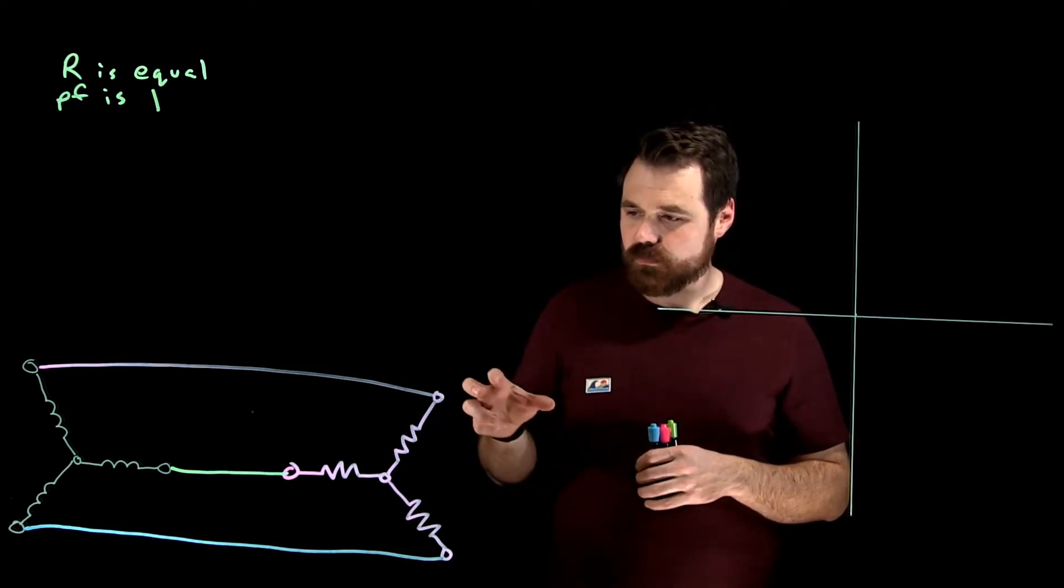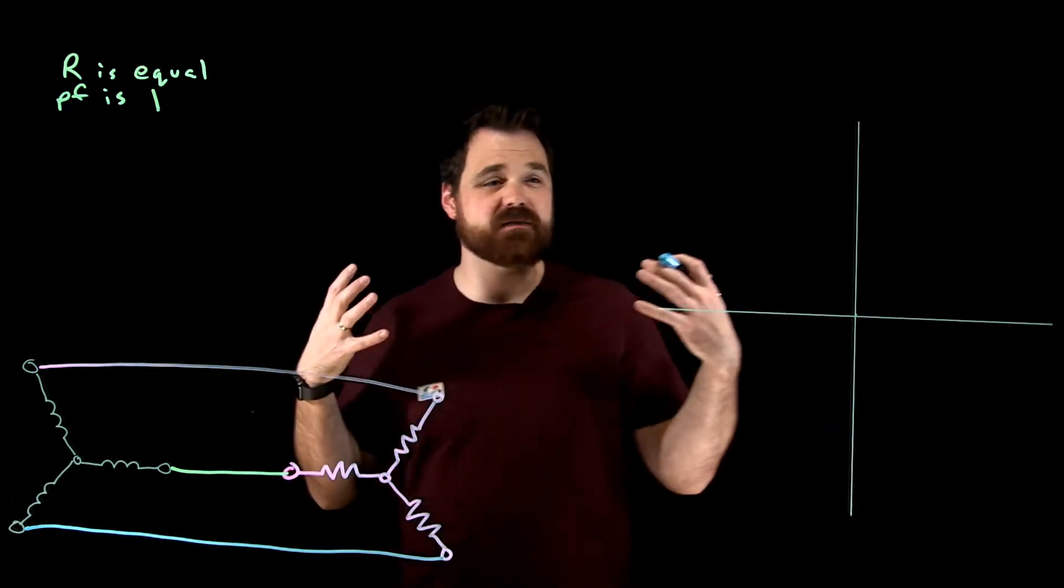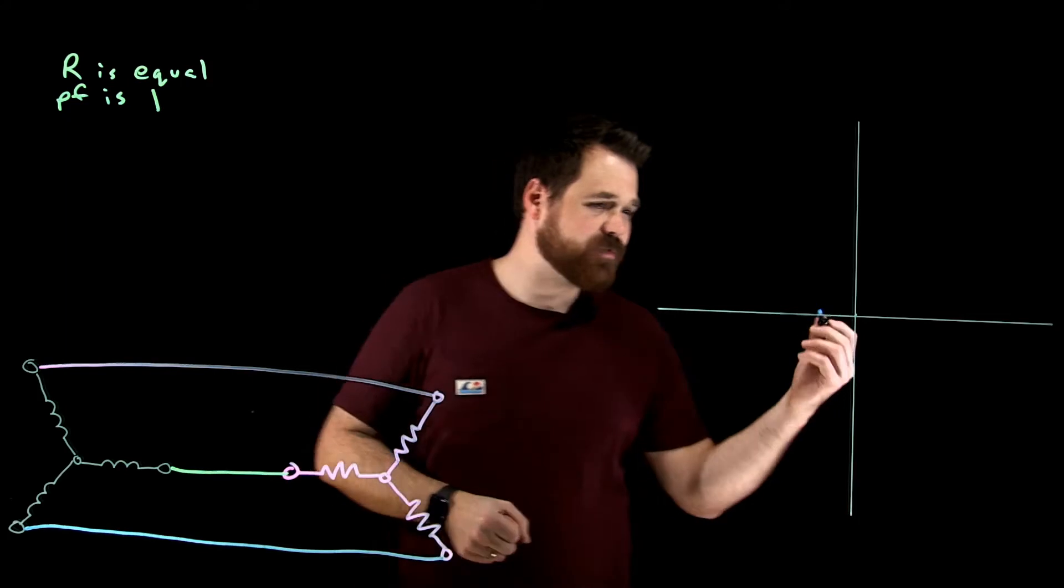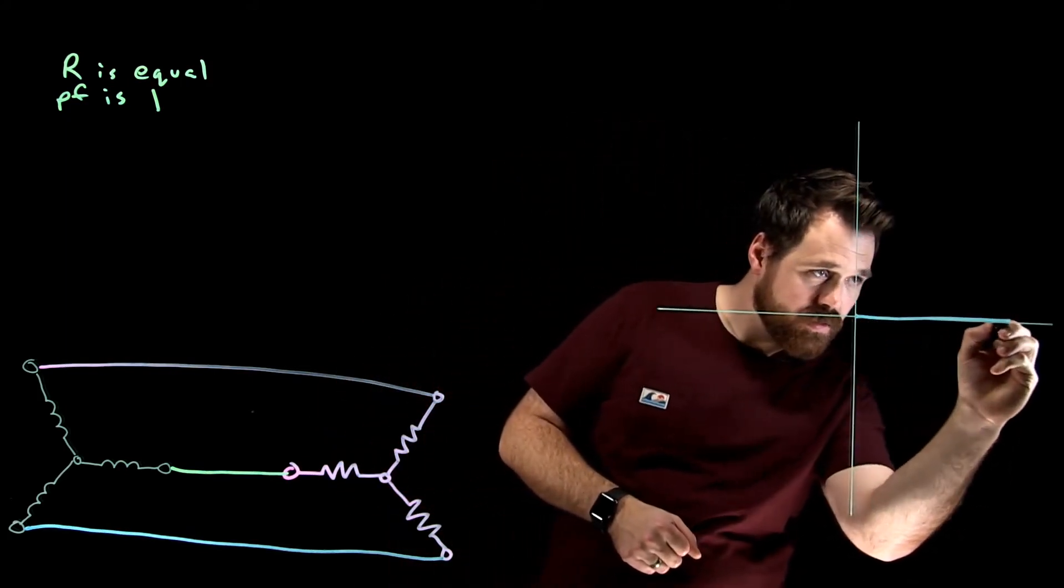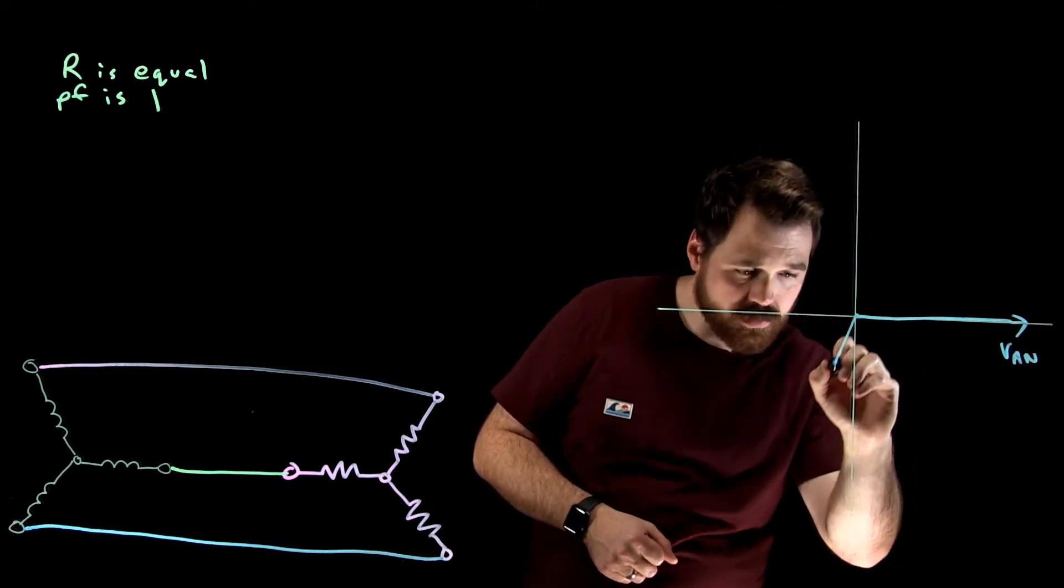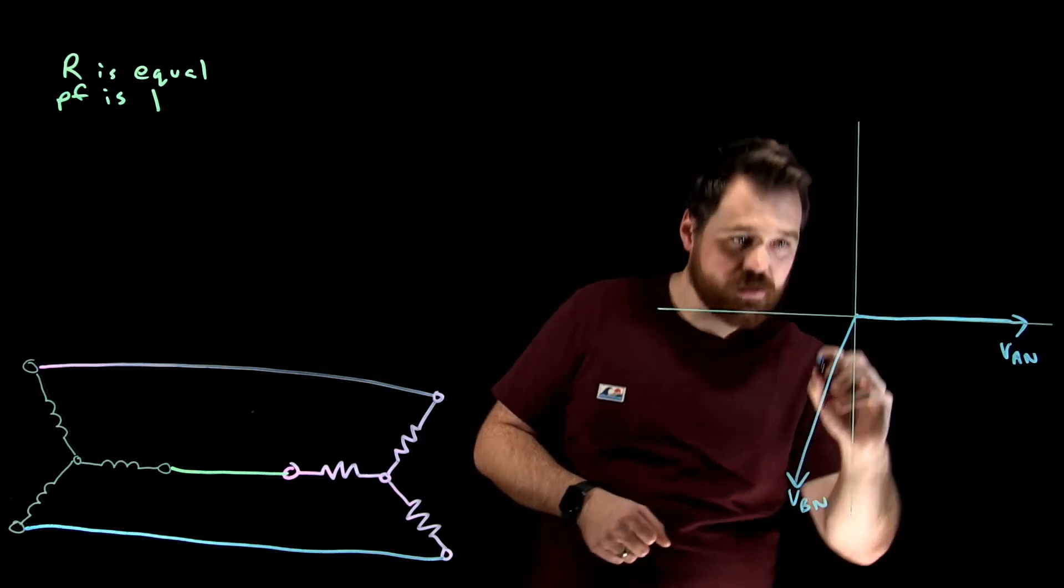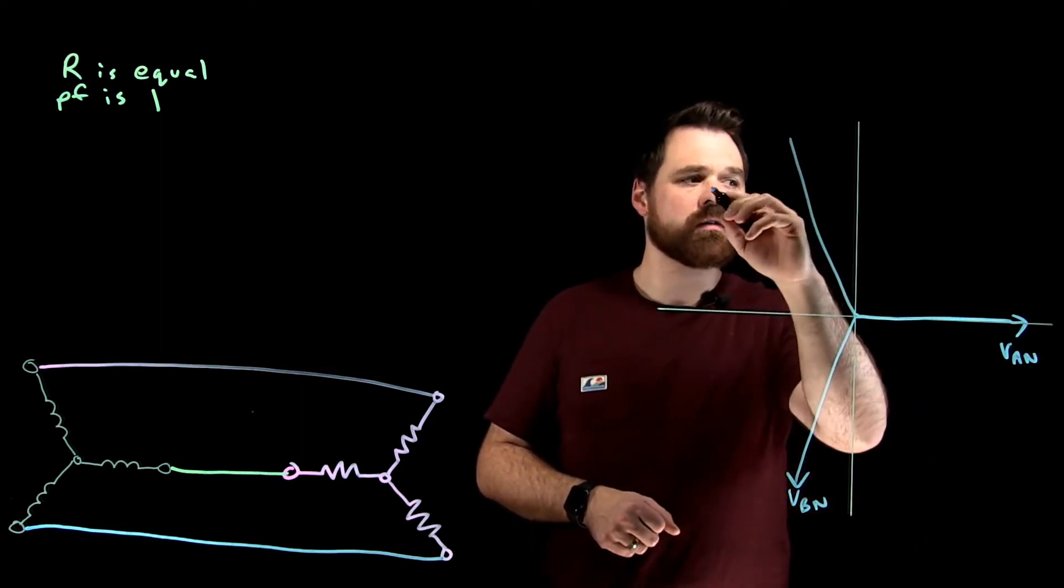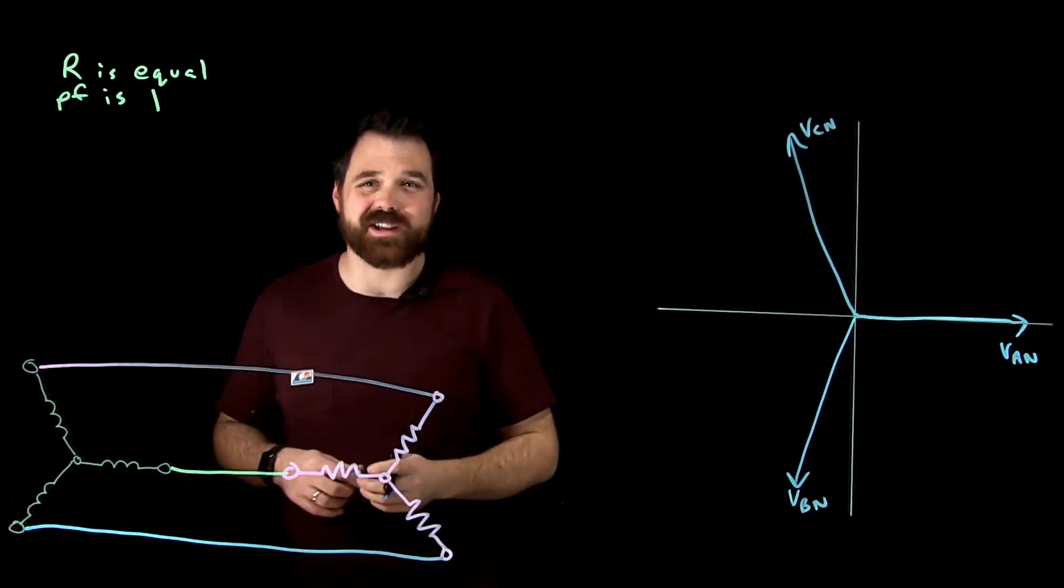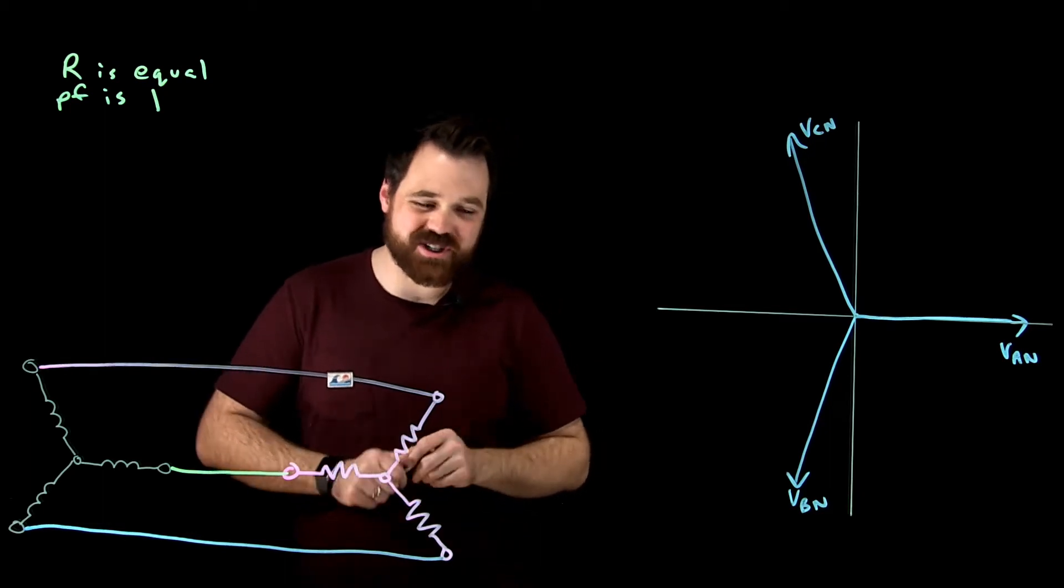So looking at this and looking at my phasor diagram, we know that our phase voltages are going to appear on this phasor diagram. So our phase voltages, we would see V A to N, V B to N, and V C to N. Obviously, they would look a lot nicer if I were to use a protractor and a ruler, but this is all just for conversation sake.